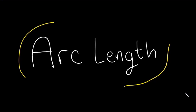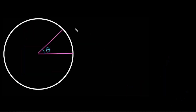Arc length. Here we have a circle with angle theta and radius r. Let's say we're asked to solve for the length of this arc between these two points, this one right here. How do we do that?